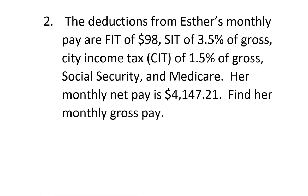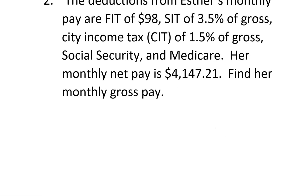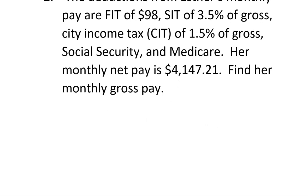Question number two. The deductions from Esther's monthly pay are federal income tax $98, state income tax 3.5% of the gross, city income tax 1.5% of the gross — which is different, but you still have to calculate it — Social Security, and Medicare. The monthly net pay is $4,147.21. Find her monthly gross pay. So they want to know the amount you started with before the taxes were taken out. It's in reverse this time.